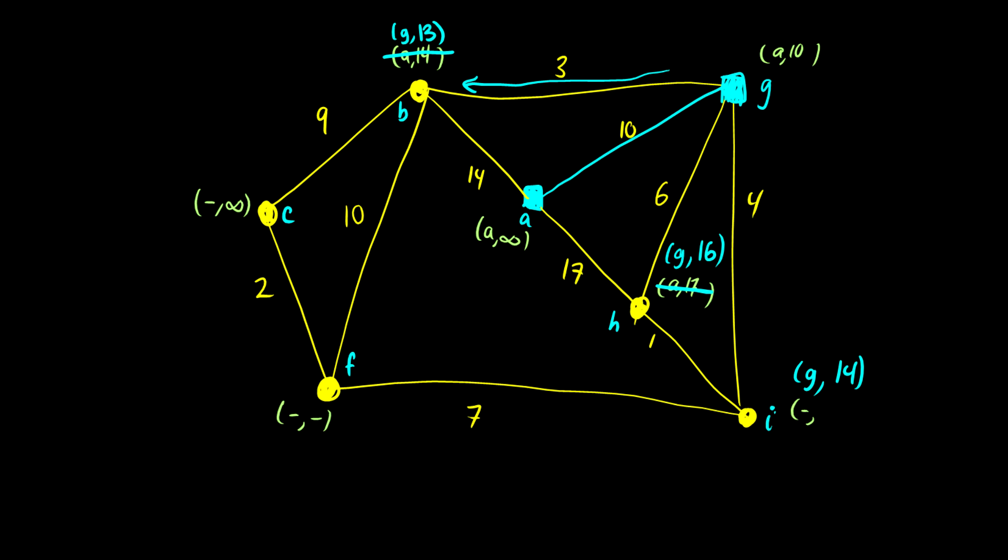So now we have some new numbers we can look at. So which is the closest? We've already done G. So is it 13, 16, or 14? Well, it's 13. So now we solidify B in there. And we say, this is now the new path. We now add B to our tree. So before we had A to G, now we're adding B there. So that's 3 from G to B, and 10 from A to G. So we've done the second one now.